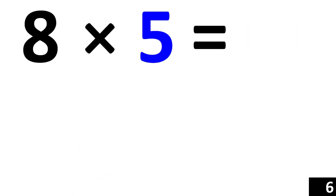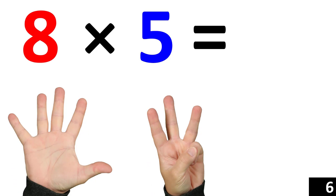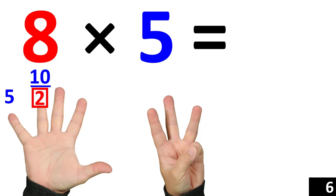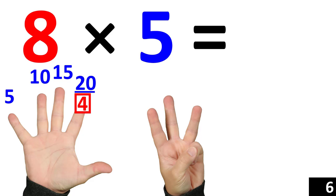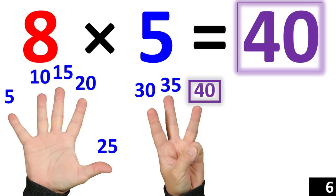Moving right along. 8 times 5 is the same thing as counting by 5 eight times. 5. 10. 15. 20. 25. 30. 35. 40. So we see that 8 times 5 is equal to 40.